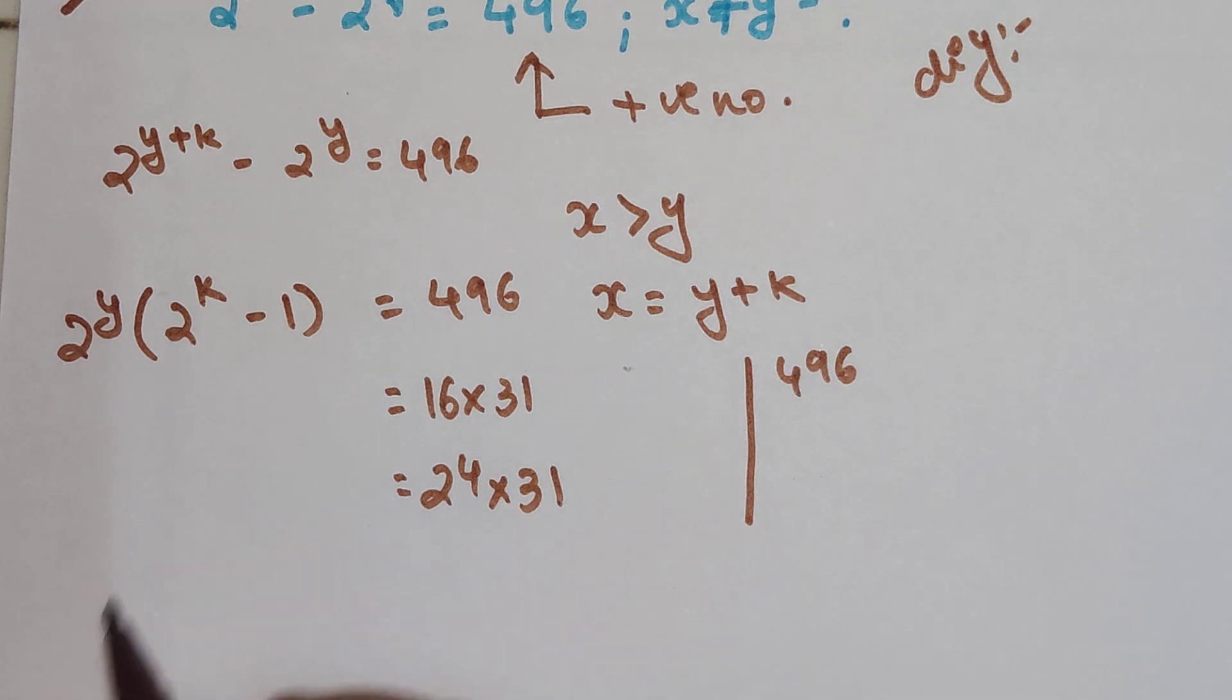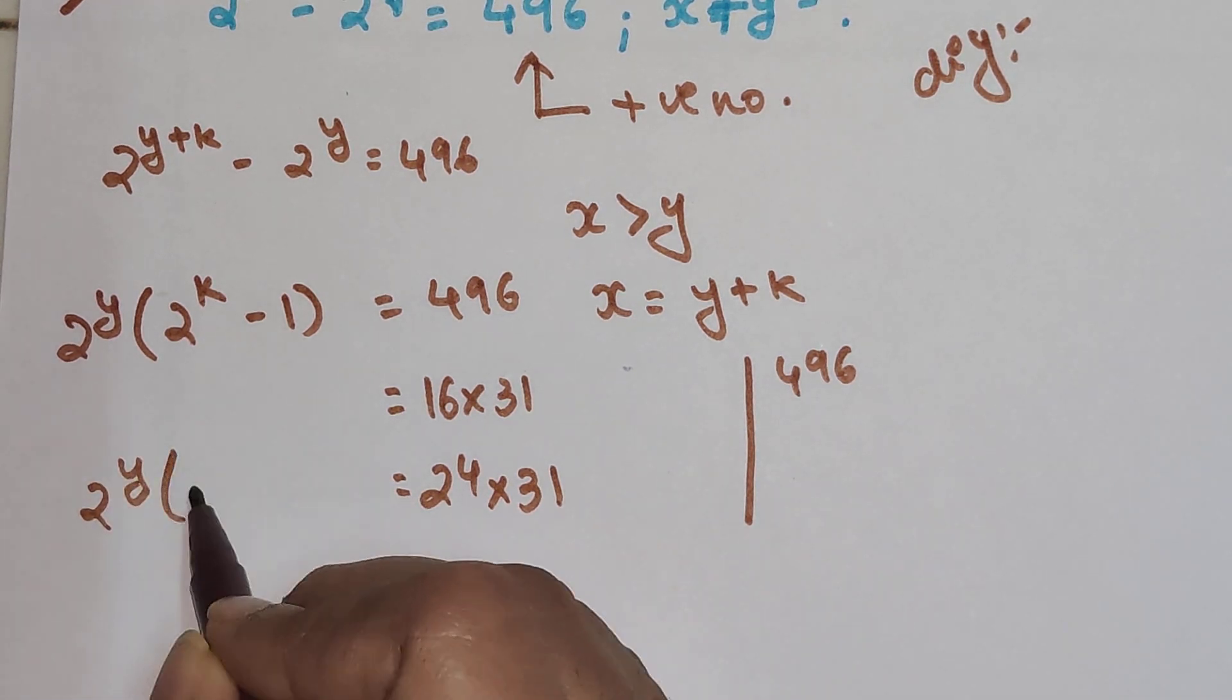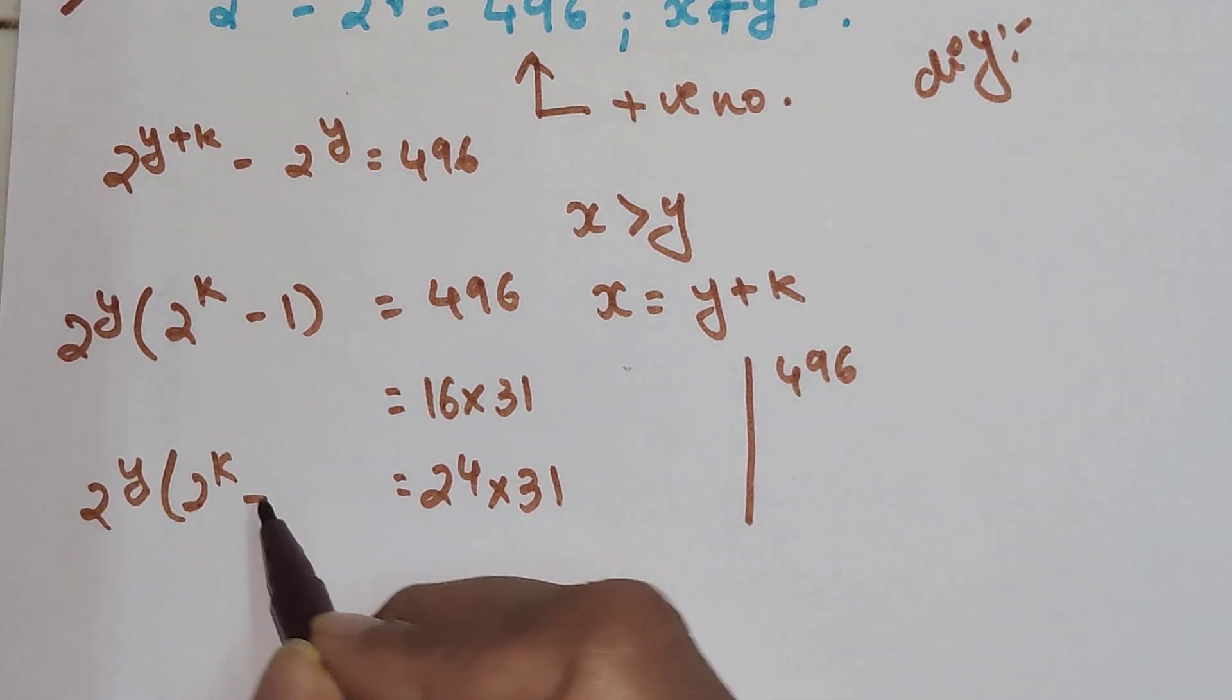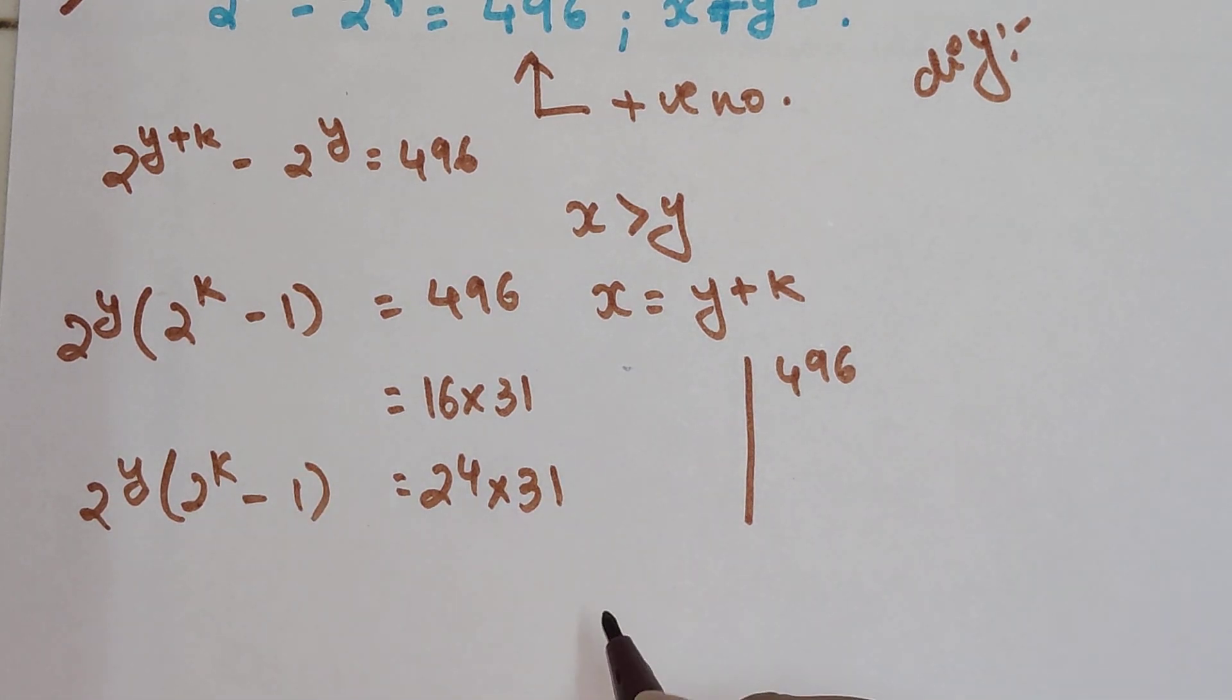Now we have 2 raised to y multiplied by 2 raised to k minus 1. From these two, I can say 2 raised to y equals 2 raised to 4, therefore y equals 4.